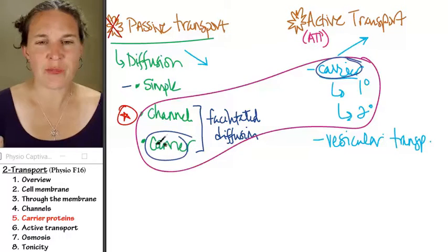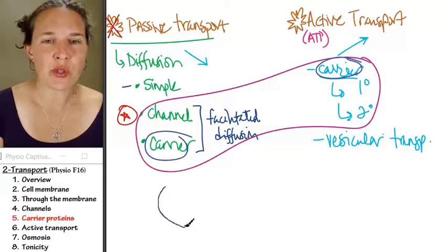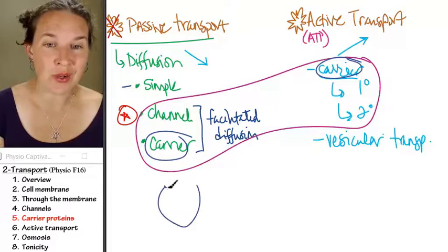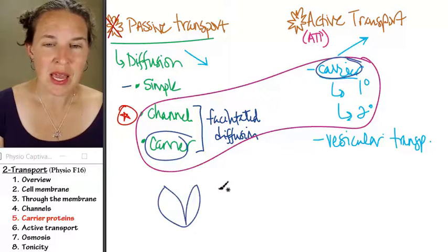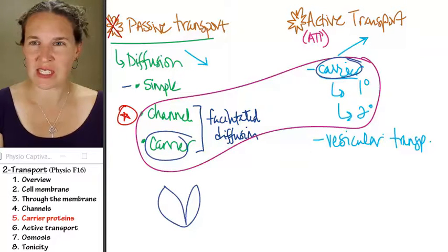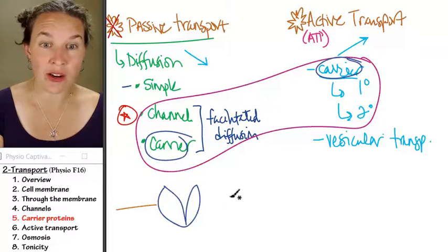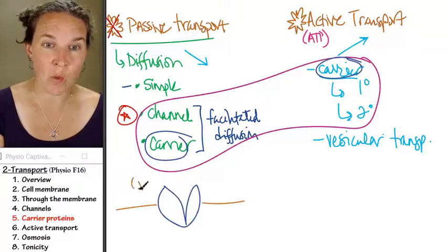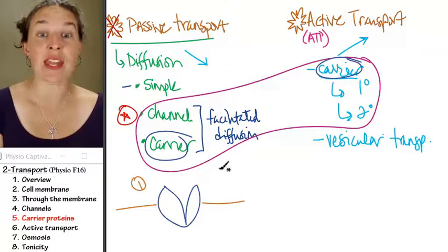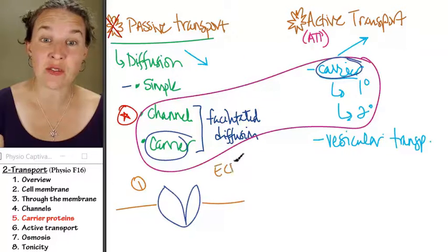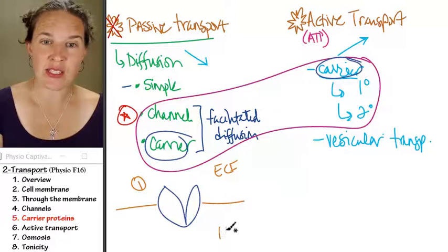So what is a carrier? These are the proteins I draw like this because I envision if this is my cell membrane, this is one carrier. So this is moment one: I have a carrier that is open to the extracellular fluid, and here is the intracellular fluid.